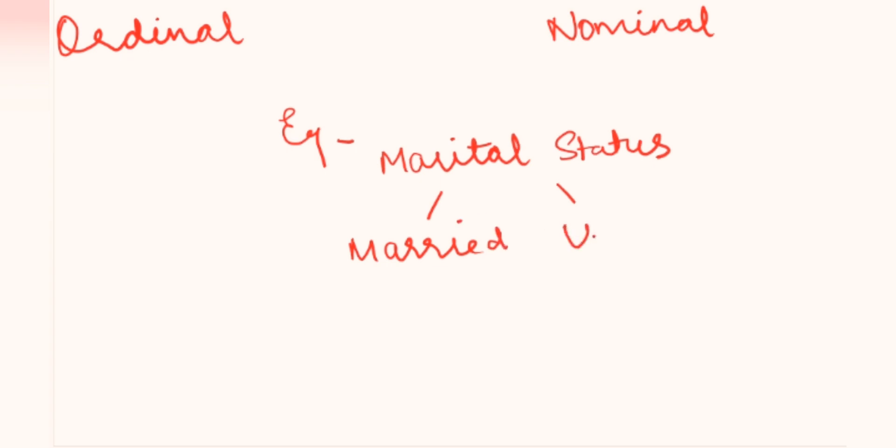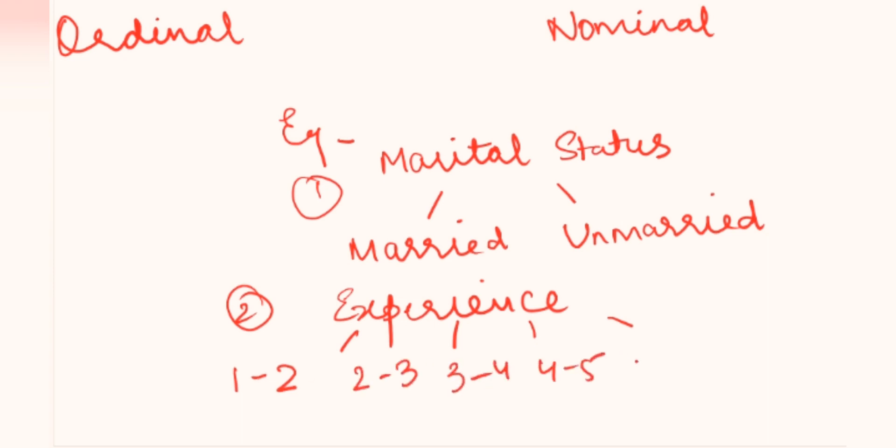Now we will talk about ordinal and nominal with examples. Marital status: married, unmarried. Experience: 1 to 2, 2 to 3, 3 to 4, 4 to 5, 5 to 6. Qualifications: BCom, MCom, PhD.